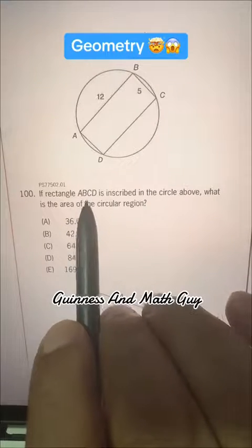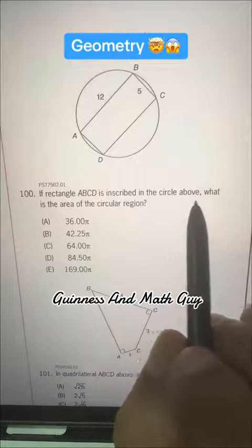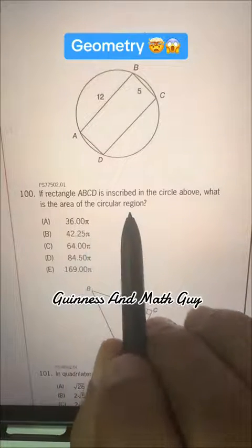If rectangle ABCD is inscribed in the circle above, what is the area of the circular region?